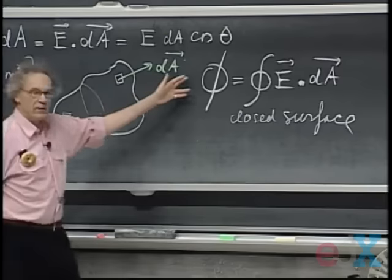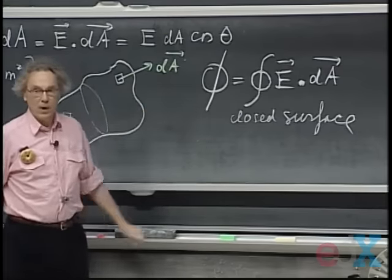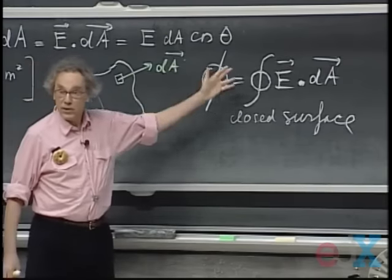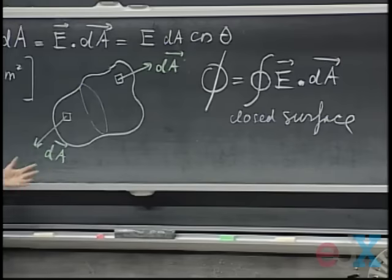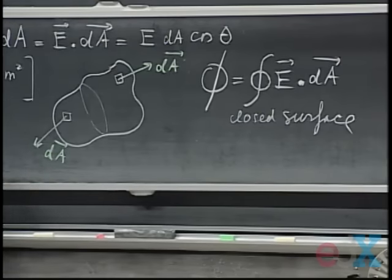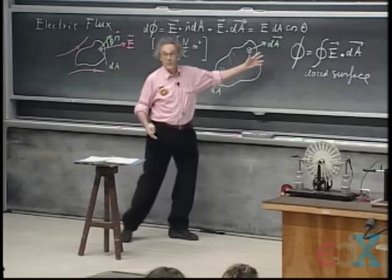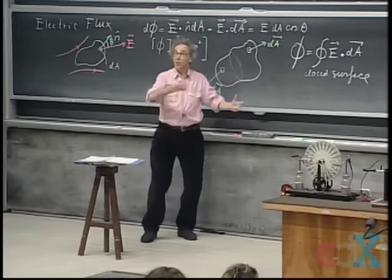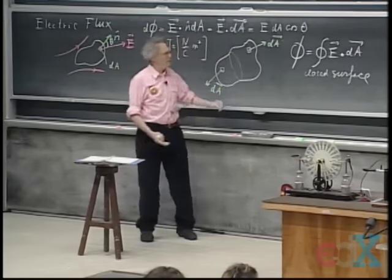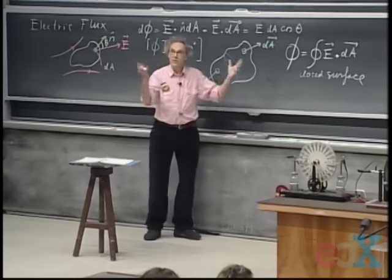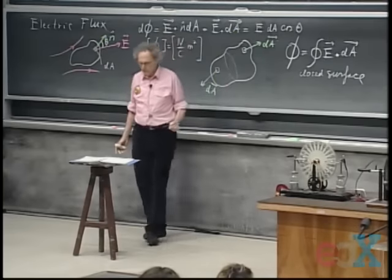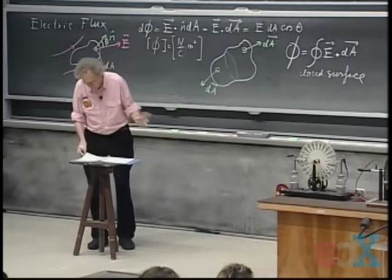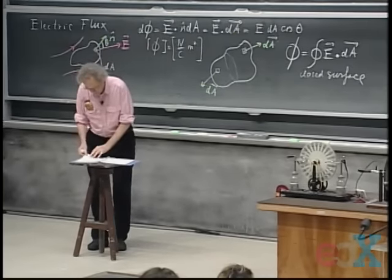This total flux through the surface could be larger than zero, smaller than zero — it's a scalar, not a vector — or it could be equal to zero. If it's equal to zero, then whatever flows in, thinking of it as air, also flows out. If more flows out than flows in, it is positive. If more flows in than flows out, it is negative.